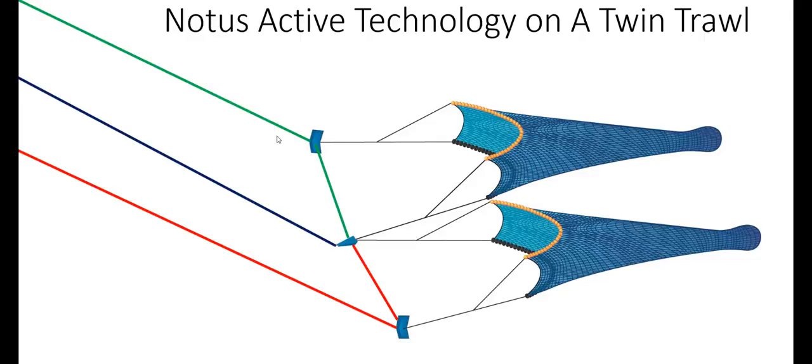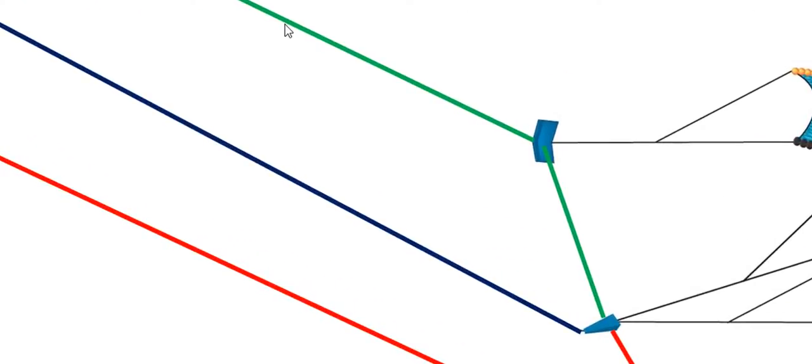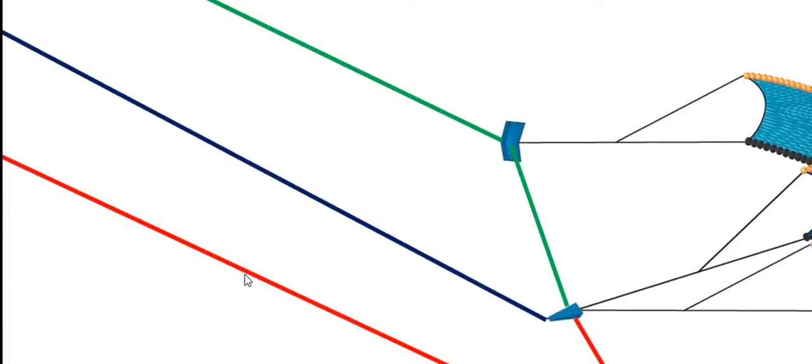So now that we know NOTUS has an active technology, what does that really mean for the captain? Well, first of all, it gives NOTUS the ability to monitor the trawl warp lengths. Here we see three warp lengths: starboard, middle, and port on a twin trawl.